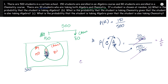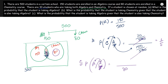Part C: probability of taking algebra given the student is in chemistry. The given condition (chemistry) goes in the denominator: 80. Students in both algebra and chemistry: 30. So the answer is 30/80 = 3/8. Whenever two overlapping groups are given, always use a Venn diagram to understand the complete scenario.